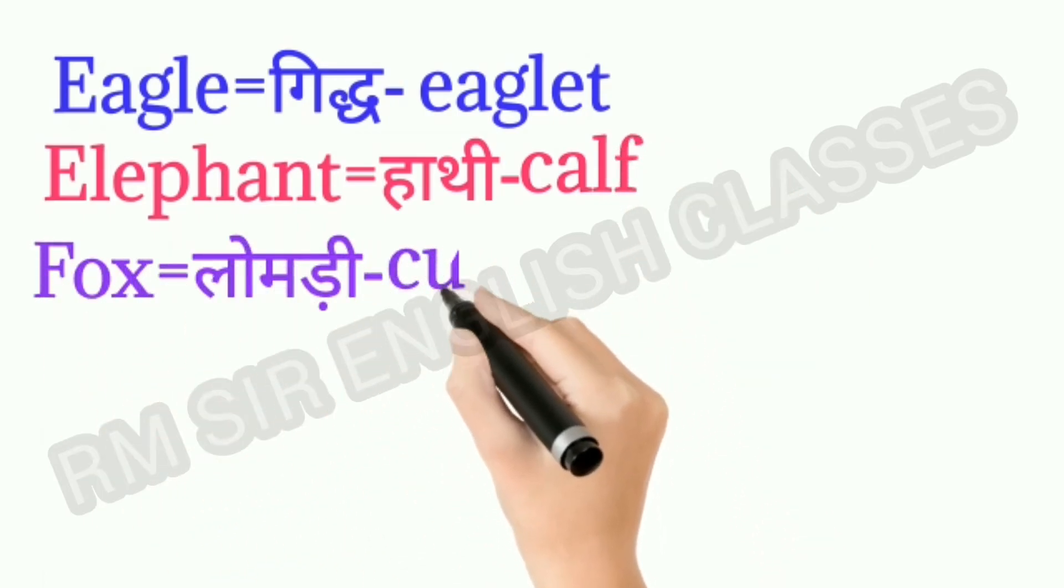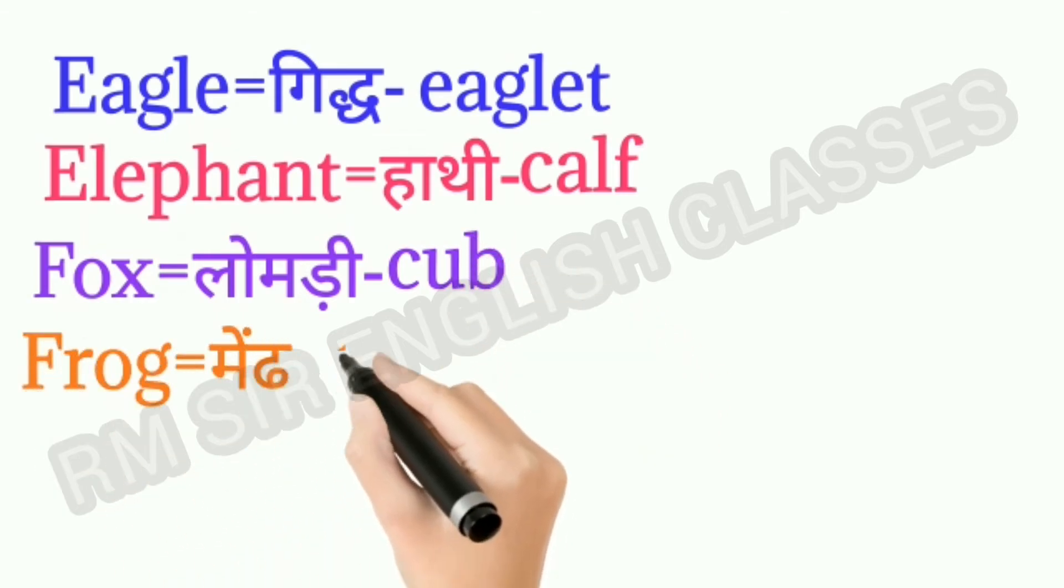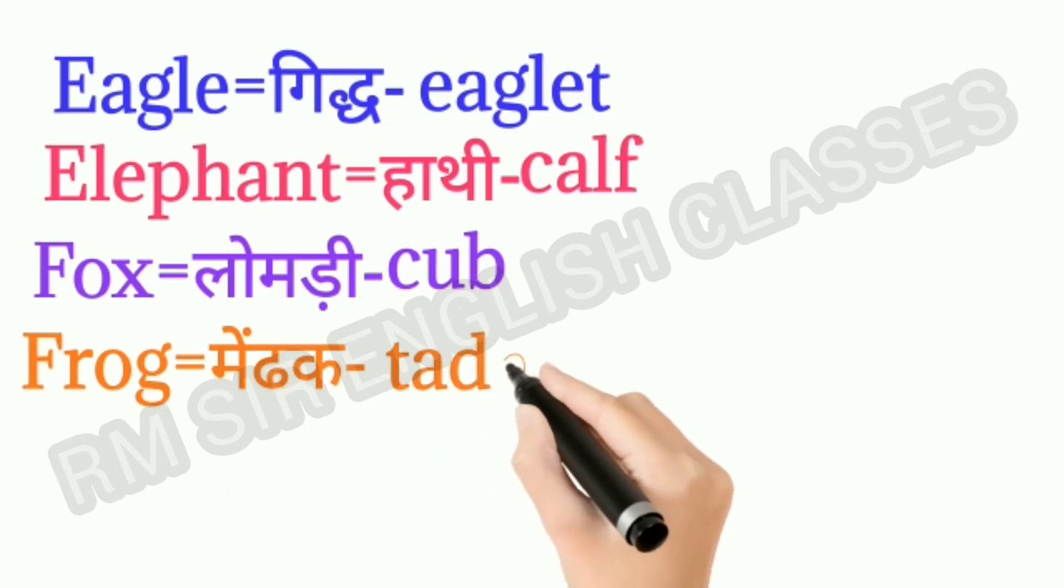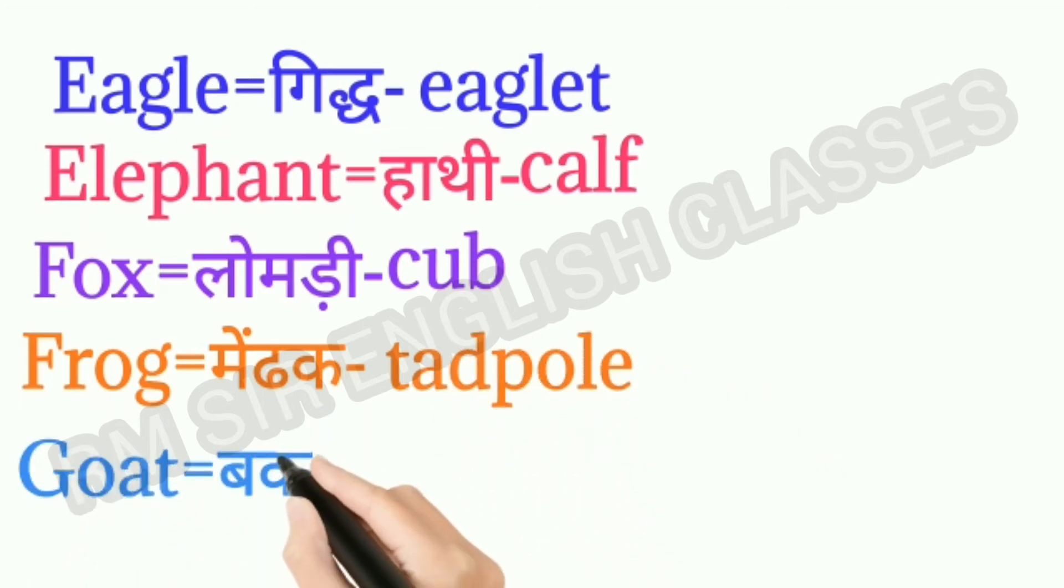Fox means lomri. Baby fox is called cub. Frog means medhak. Baby frog is called tadpole. Goat means bakri. Baby goat is called kid.